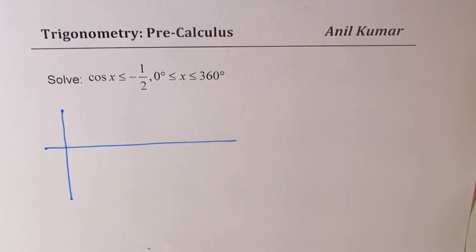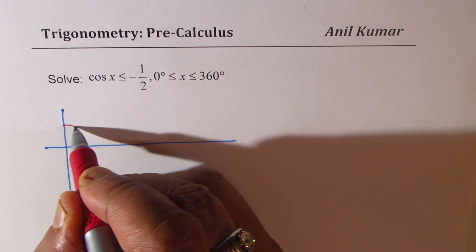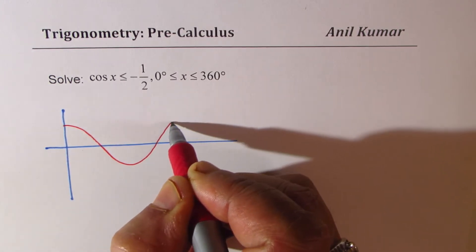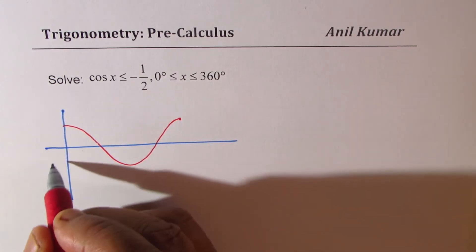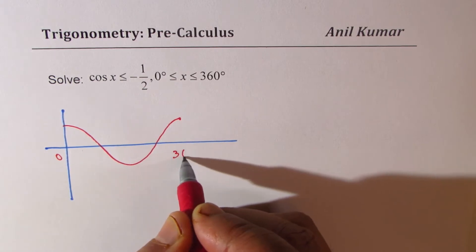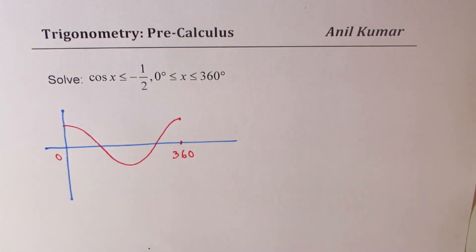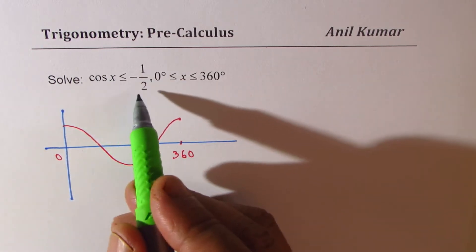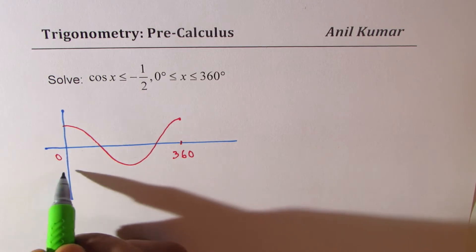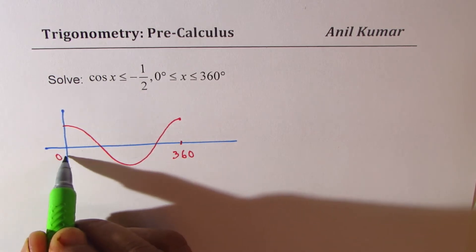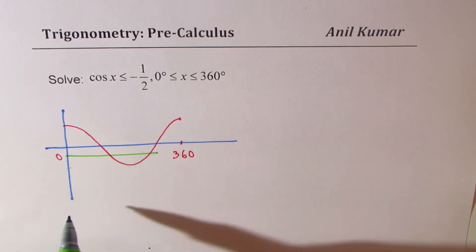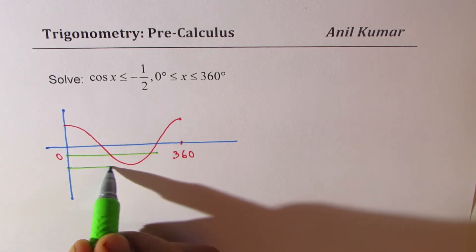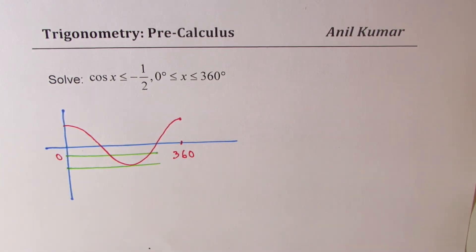Cosine x approximately can be sketched kind of like this. This is between 0 to 360. Now, if I'm saying that cos x should be less than or equal to minus half, then we know this is minus 1, so somewhere here. So we are looking for something which is in between these two.